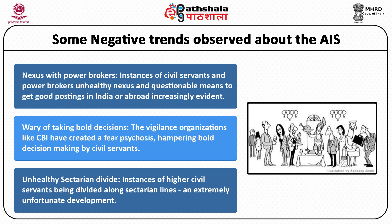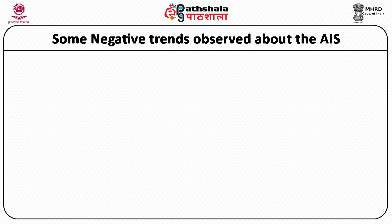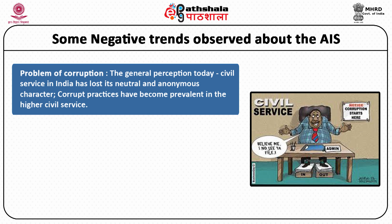The third unhealthy trend noticed is the sectarian divide amongst the officers of All India Services. Officials at the highest levels in the Indian Administrative Service, Indian Police and Forest Service have been found divided along sectarian lines, promoting their own vested sectarian interest rather than working in the interest of the entire society. There is a problem of corruption that has crept into the functioning of the officers of All India Services, emerging because of the unhealthy nexus between politicians and bureaucrats and non-transparent functioning of the administration.